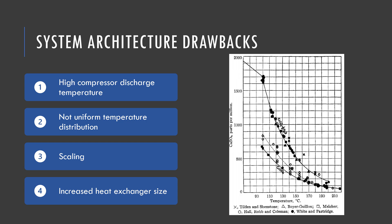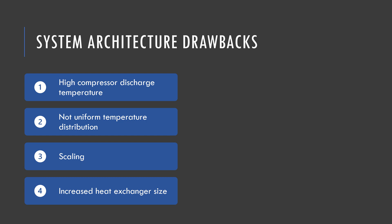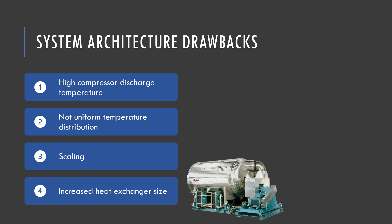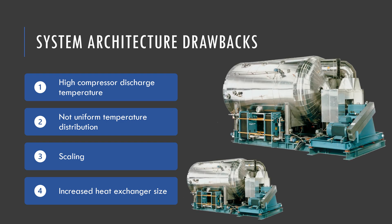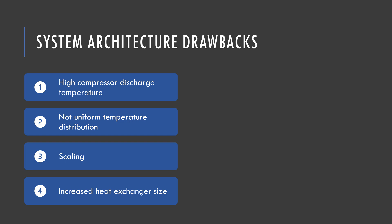All of these consequences related to the high discharge temperature limit the saturated temperature rise in the compressor to between 2 to 5 degrees Celsius, therefore reducing the mean temperature difference in the falling film evaporator and increasing its size. Resolving the high discharge temperature issue of the compressor will create a cascade of improvements leading to efficient operation and design.